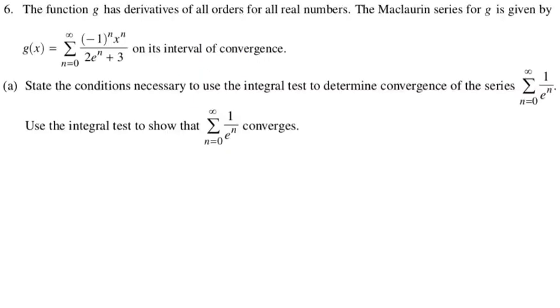Okay, in this video we're going to talk about number six from the 2021 Calc BC exam. It is the series question as usual, so let's take a look. The function g has derivatives of all orders. Actually, this part is irrelevant to the first question, but anyway, the Maclaurin series for g is given by this thing on its interval of convergence.